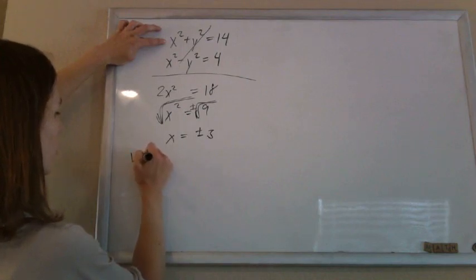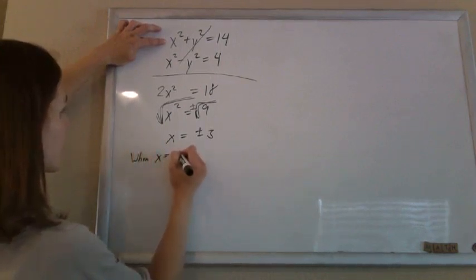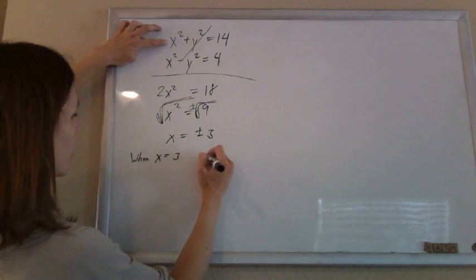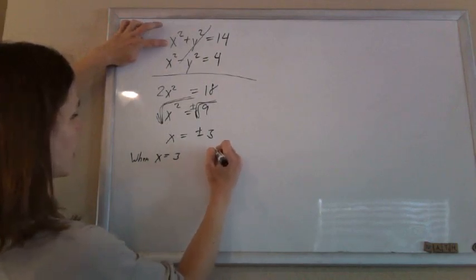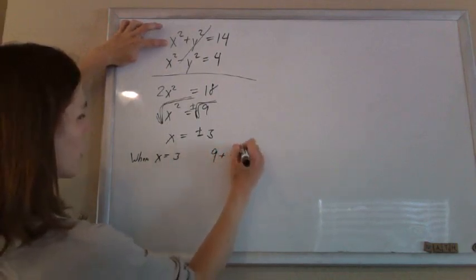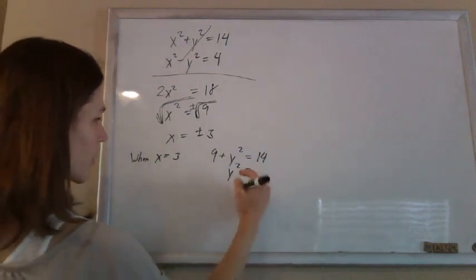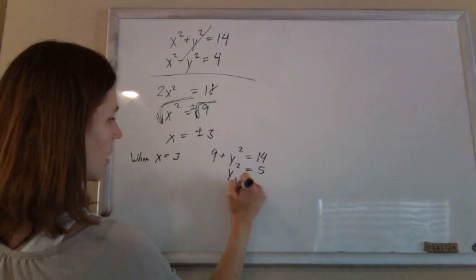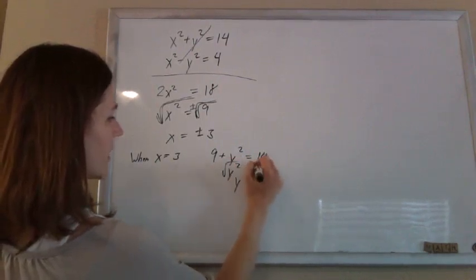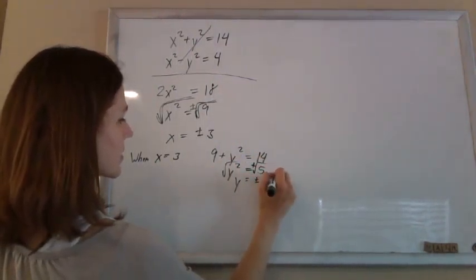So when x is a positive 3, then I'll plug it into the first one. I'll have 9 plus y squared is 14. Solving this, y squared would equal 5. So y would be, again, fancy hats, plus or minus the square root of 5.